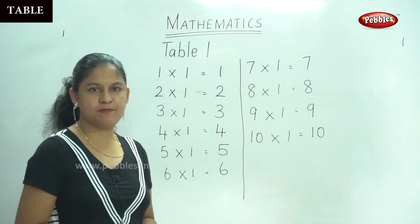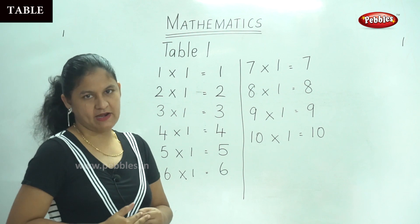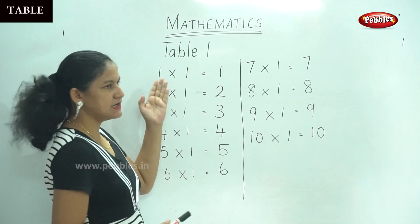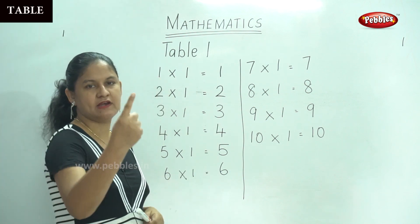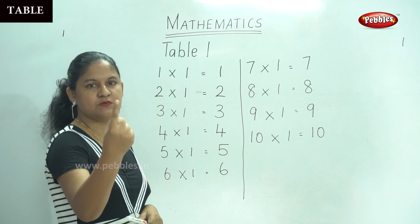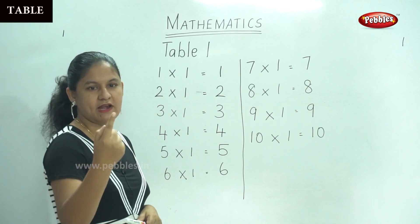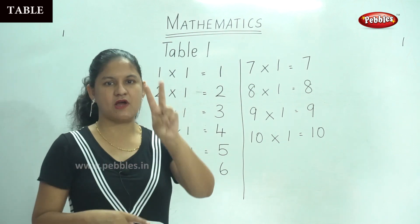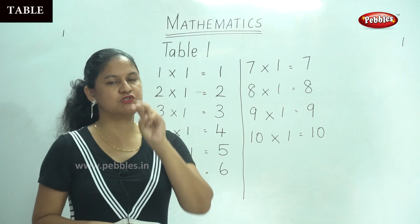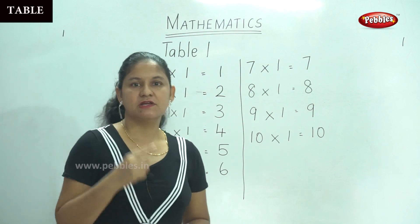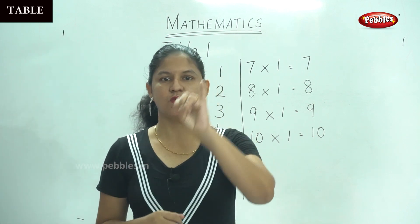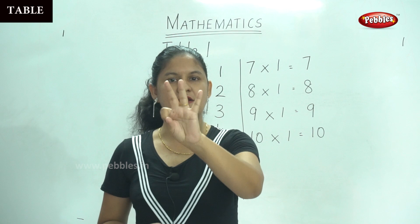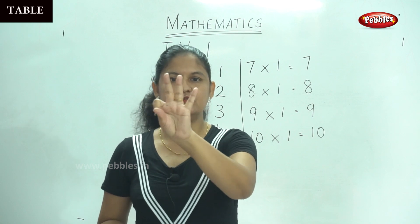So this is your Table 1. Shall we see it again? 1 times 1 gives you 1. 2 times 1 gives you 2. 3 times 1 — counting 1, 1, 1 — gives you 3.